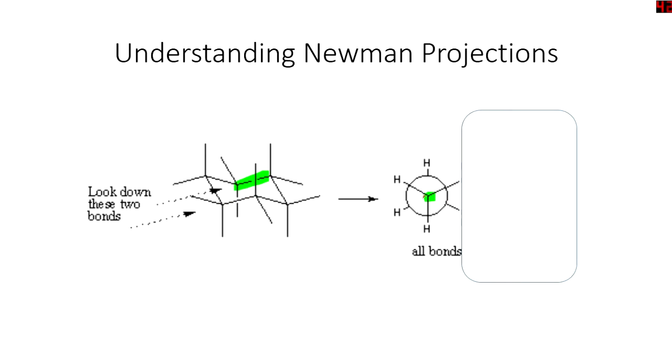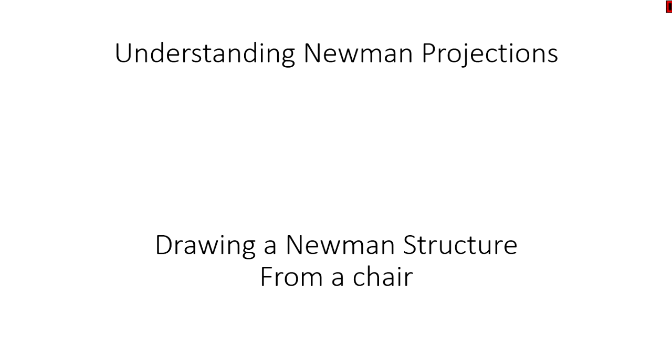So first, we'll look up this green bond, and we'll draw our Newman projection there. And next, we'll look up the yellow bond, and we'll see a Newman projection there. That's really the general concept. So now I'm going to show you how to do that. That was an overview.